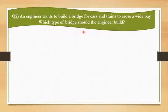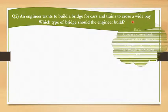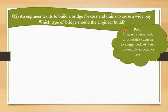An engineer wants to build a bridge for cars and trains to cross a wide bay. Which type of bridge should the engineer build? The book tells us that a bridge has to be constructed, but what kind of bridge? There are two things you must know in this question: what is a wide bay? A bay is a coastal body of water that connects to a larger body of water, for example, an ocean or sea.